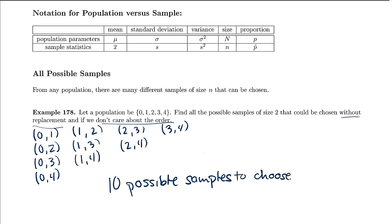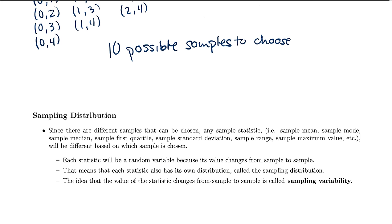Depending on which sample you pick, you'll get different sample statistics — different sample averages, standard deviations, and so on. This is what we call a sampling distribution. Since there are many different samples that could be chosen, any sample statistic — like your mean, mode, or median — will be different based on which sample you choose. We call each statistic a random variable because its value can change from sample to sample, and this is called sampling variability.